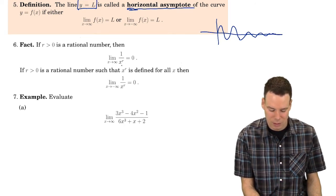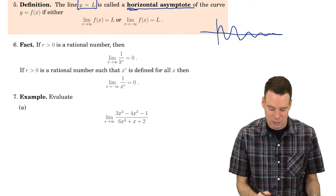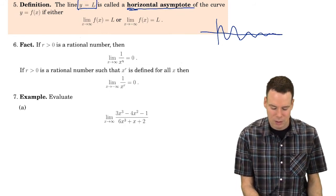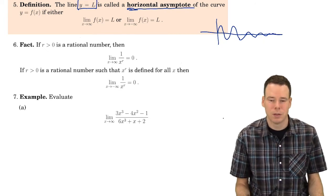So the limit as x goes to infinity, x to the r, r is a positive number, so as you take x getting bigger and bigger and you're taking a power of it, the power of r, that's still getting bigger and bigger. The reciprocal of it is going to 0.